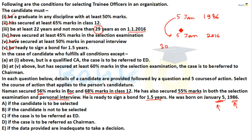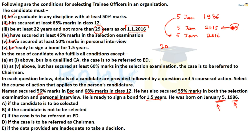However, if we calculate from 5th January 2015 to 1-1-2016, his age comes to 29 years. Since this does not satisfy the condition and there is no exception applicable, the candidate is not selected.